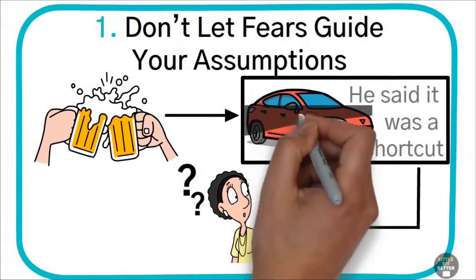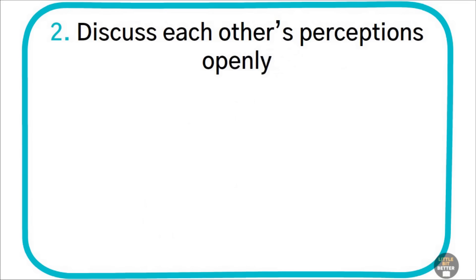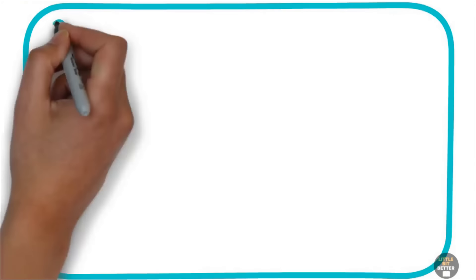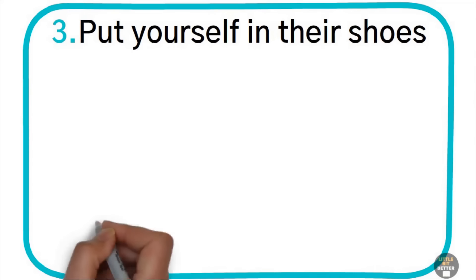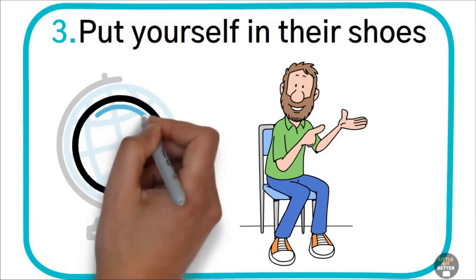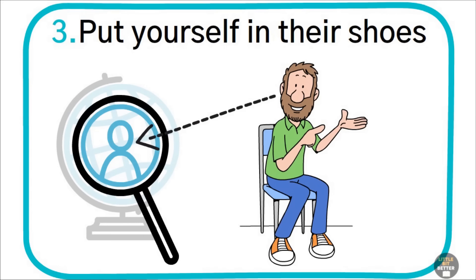Two, discuss each other's perceptions openly. Here is how things look like from my perspective. How does it look from your perspective? Three, put yourself in their shoes. How you see the world depends on where you sit. It's not enough to study them like beetles under a microscope. You need to know what it feels like to be a beetle.